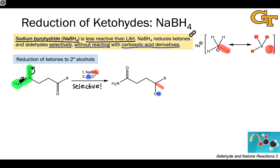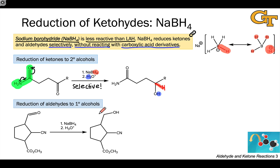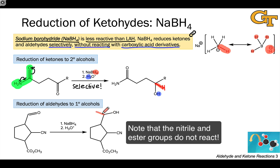Electron flow like this, especially this first curved arrow, emphasizes this idea. Just like lithium aluminum hydride, sodium borohydride also reduces aldehydes to primary alcohols. And here again, the nucleophilic hydrogen ends up linked to the carbonyl carbon — here it's implied.